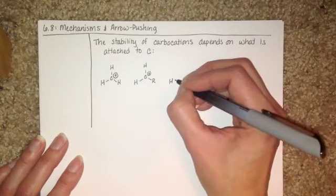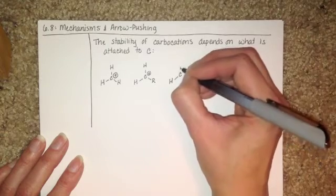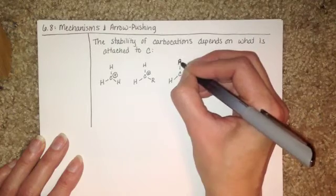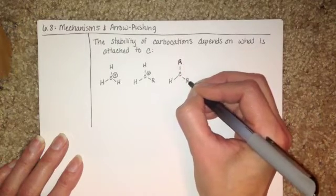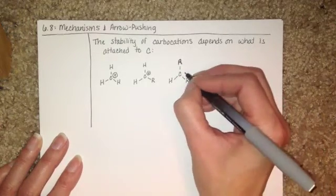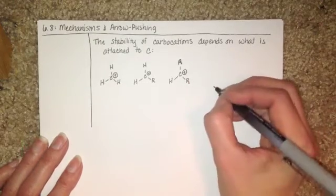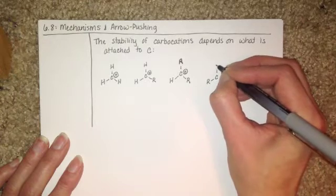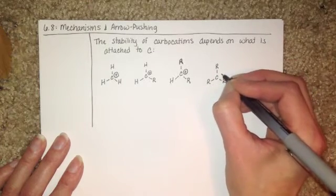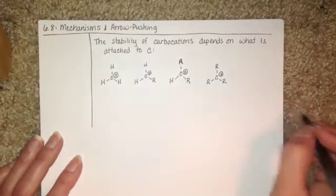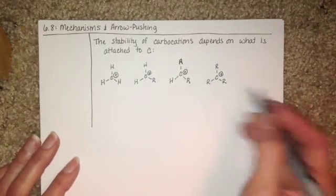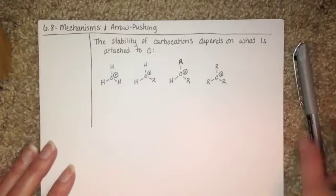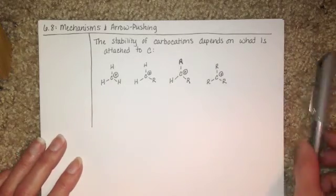Compare that to some sort of carbocation that has one hydrogen atom and two alkyl groups, and we'll compare that to a carbocation that has no hydrogens attached to the carbon and three alkyl groups. So again, R is just some sort of hydrocarbon, ethyl group, propyl group, cyclohexyl, who knows what it is. So these are four generic types of carbocations.